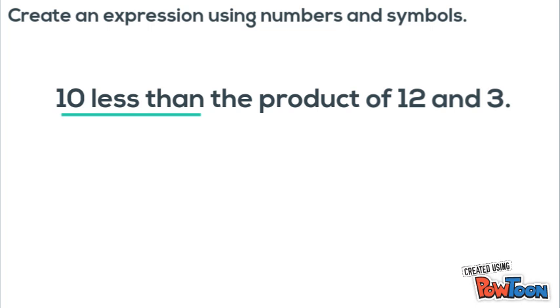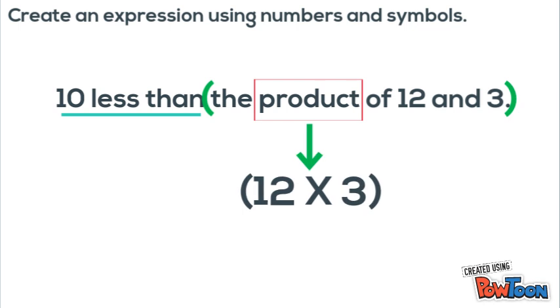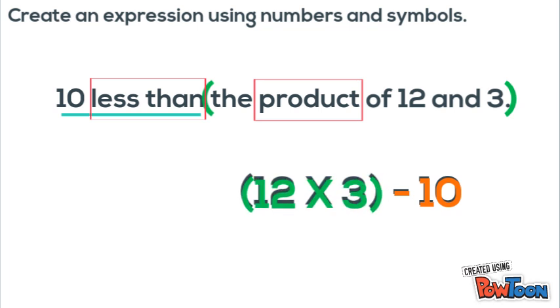That means we're subtracting 10 from something else and that something else is the product of 12 and 3. Now product means the answer to a multiplication problem so we'll put 12 times 3 in parentheses because we have to do that first before we subtract 10. And again, less means to subtract so then we'll write minus 10. And now we have a numerical expression for 10 less than the product of 12 and 3.